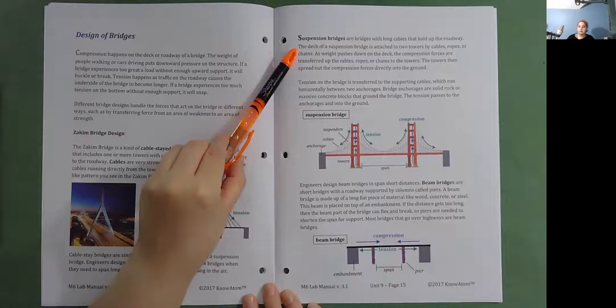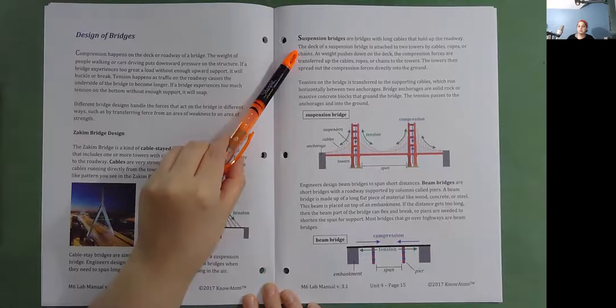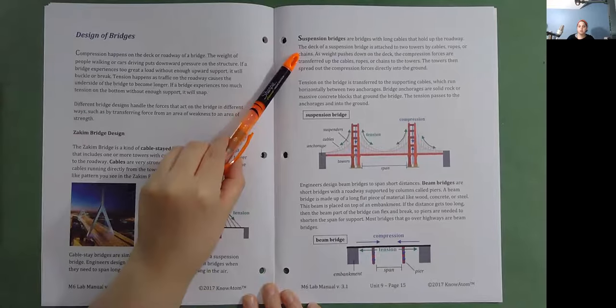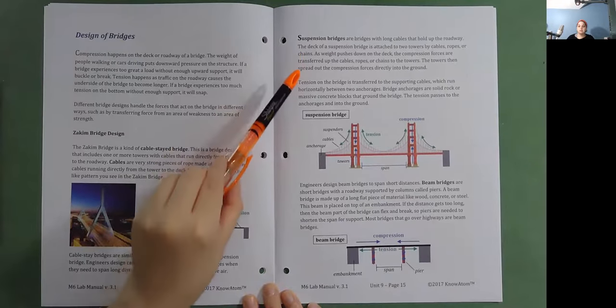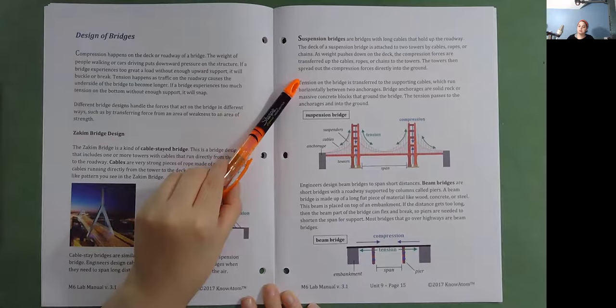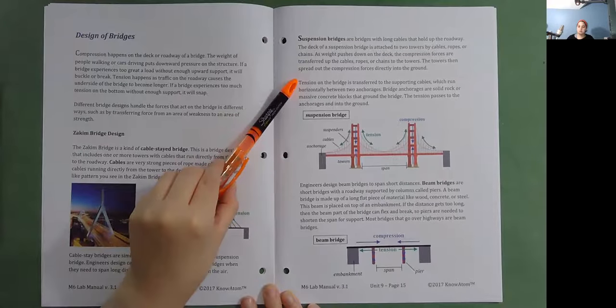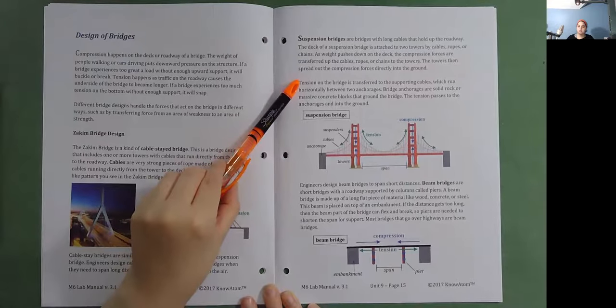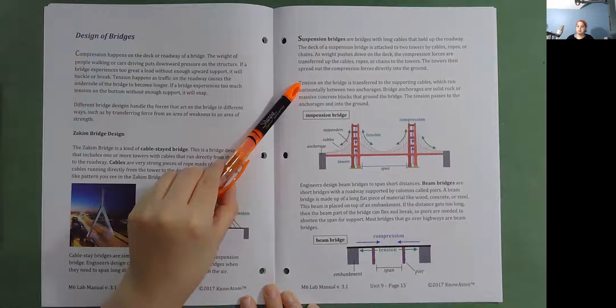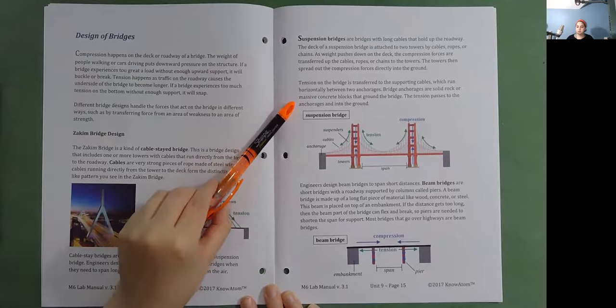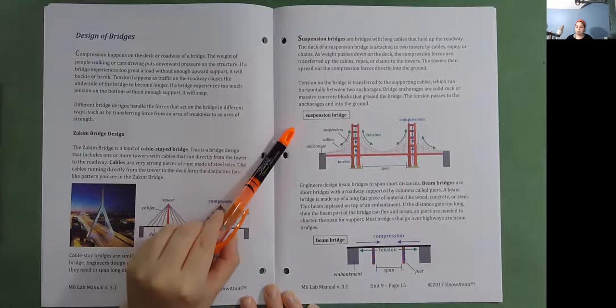As weight pushes down on the deck, the compression forces are transferred up the cables, ropes, or chains to the towers. The towers then spread out the compression forces directly into the ground. Tension on the bridge is transferred to the supporting cables, which run horizontally between two anchorages. Bridge anchorages are solid rock or massive concrete blocks that ground the bridge. The tension passes to the anchorages and into the ground. So here's a diagram of a suspension bridge.